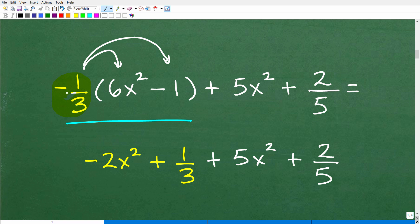So we have to figure out what negative one-third times 6x squared is. Now, if your child did this correctly, negative one-third times 6x squared will give us a negative 2x squared. We have a negative times a positive. That's going to be negative. And so one-third times 6 is going to be 2. So negative times positive, we're going to end up with negative 2x squared.